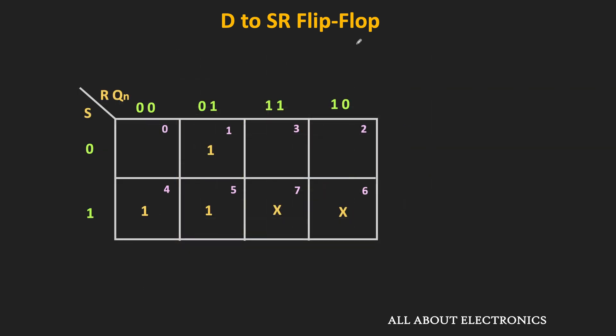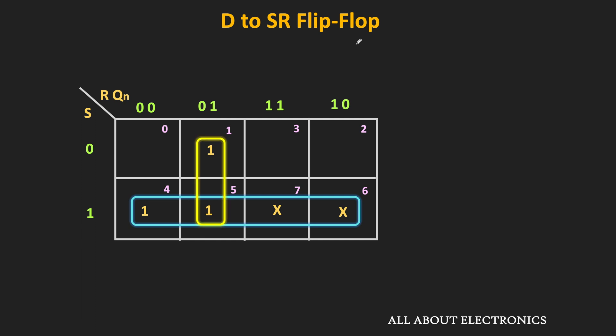All the min terms are represented in the K-map. With the help of the don't care terms, we can make a group of four min terms. And similarly, to cover min term M1, we can make a group of M1 and M5. This first group corresponds to S. The second group corresponds to R'·Qn, because in that group the value of R is 0 while the value of Qn is 1. Therefore the expression of D is the summation of these two terms: D is equal to S plus R'·Qn.